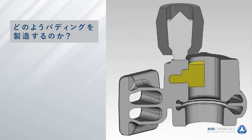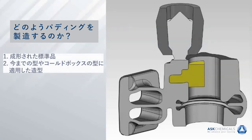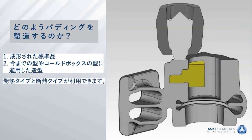Now that we have a software solution, we need to realize it as hardware — moving from simulation into the foundry. There are two ways to handle a padding: first, you can order a ready-to-use piece directly from ASK, which you simply place in your mold box or core box. Second, you can obtain the exothermic or insulating mixes from ASK and produce the padding yourself in your foundry process.